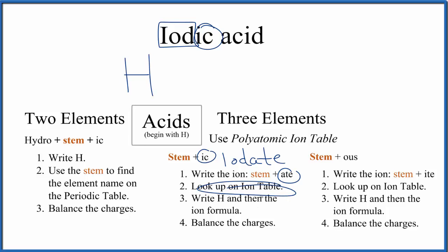My periodic table doesn't have the iodate ion, so I just looked that up on the web. The iodate ion is IO3 minus. So far we have HIO3 as the formula for iodic acid, but we need to balance the charges.